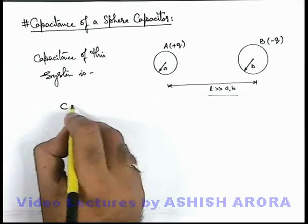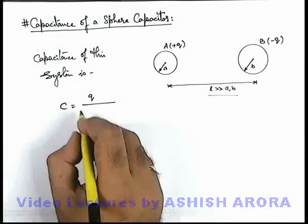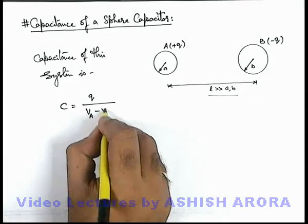This can be given as the amount of charge supplied divided by the potential difference, that is V_A minus V_B.